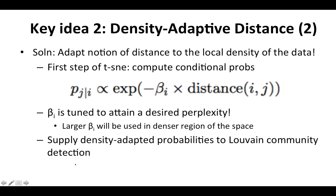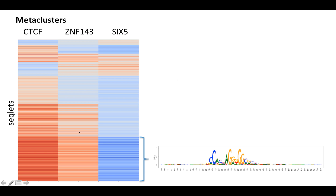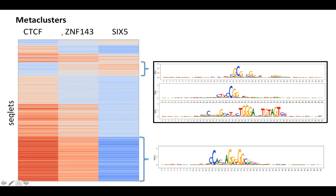Just going over the results, coming back to our case study, here are the meta-clusters that we get for the model trained on CTCF, ZNF143, and SIG-FI. In this meta-cluster, which is high for CTCF and ZNF and low for SIG-FI, we get the CTCF motif consistent with known biology. In this meta-cluster, which is high for ZNF and SIG-FI, we pick out the canonical SIG-FI ZNF143 motif. We pick out an ELF1 motif, and we pick out something that looks a lot like a CpG signature, which could be picking up the fact that ZNF143 preferentially binds to promoters, which are rich in CpG.